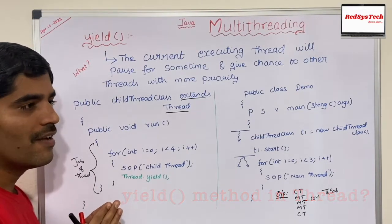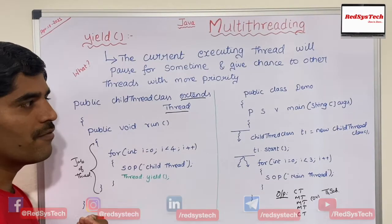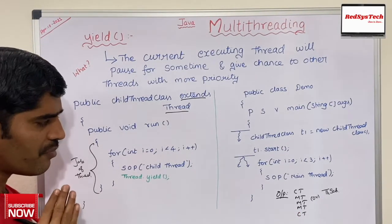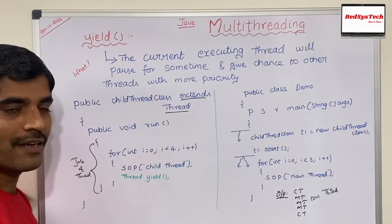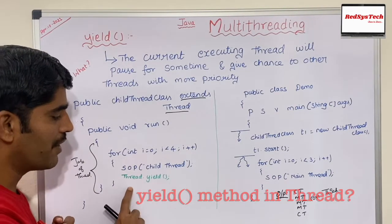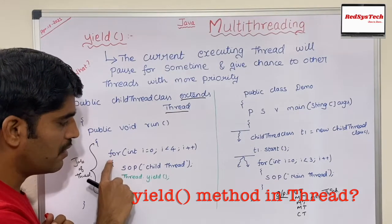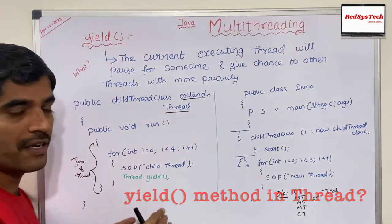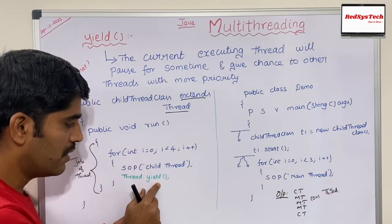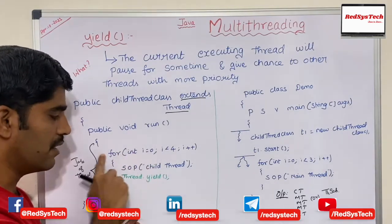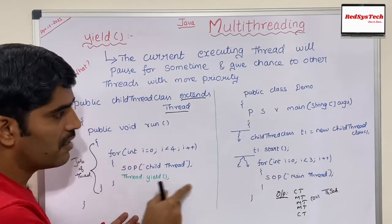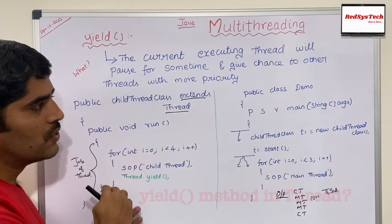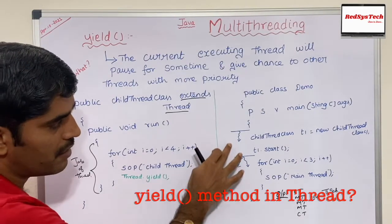The reason Oracle's developer team created yield is this: when multiple threads are running and one thread keeps running for a very long time without giving a chance to others, we need to know if that thread is genuinely executing or has hung. So yield allows the current executing thread — the child thread — to give a chance to other waiting threads, after which it resumes.